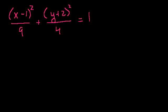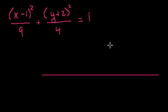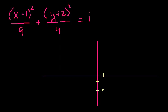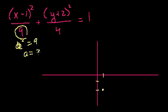Let's graph this. Drawing the axes, we immediately see the center is at the point (1, −2). If that's confusing, you may want to review previous videos. The major axis is horizontal because 9 is larger than 4. So a squared equals 9, meaning the semi-major radius a equals 3. In the y direction, b squared equals 4, so b equals 2.